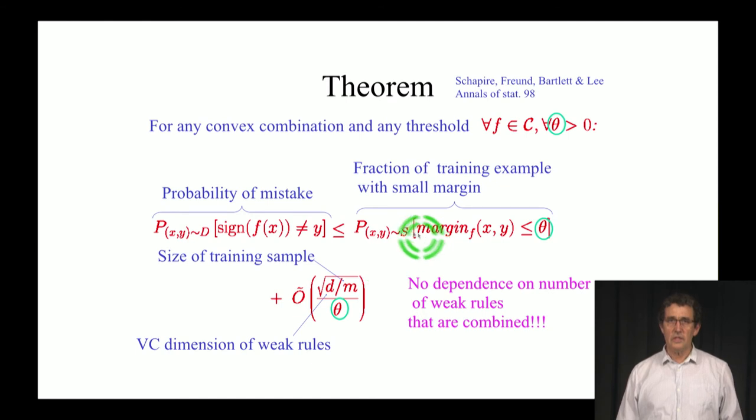But the important thing, the thing that explains basically the experiments, is that there is no dependence on the number of weak rules that are combined. When we say that this has two million parameters, this is really not so important, because the important thing is how much of a margin we can get, and the number of parameters can be ignored. That basically says there's no dependence here on the number of parameters, as long as you have a significant margin. If you know something about support vector machines, there are very similar theorems in that case, too.